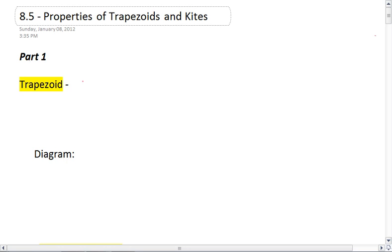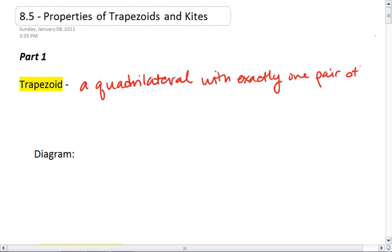A trapezoid is a quadrilateral with exactly one pair of parallel sides. So a parallelogram has two pairs of parallel sides. A trapezoid only has one.